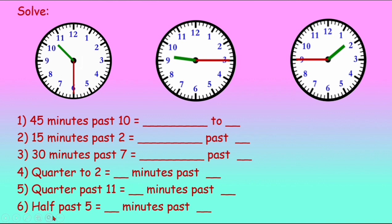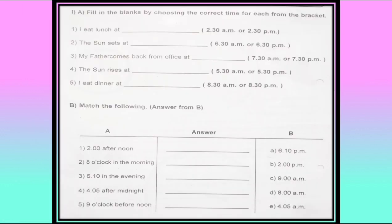Solve this exercise in your rough books. Fill in the blanks by choosing the correct time from the bracket. I eat lunch at dash — is it 2:30 AM or 2:30 PM? AM means early morning, PM means in the afternoon. So we have lunch at 2:30 PM.